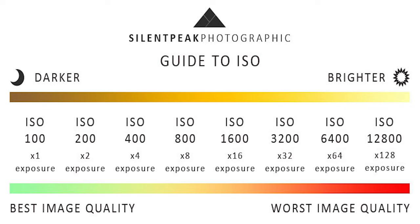ISO is also used to adjust the darkness and brightness of your image. A lower ISO will darken an image and not add noise or grain, while a higher ISO will brighten an image, but you're introducing noise and grain as you go higher into the ISO range.